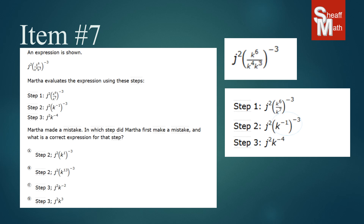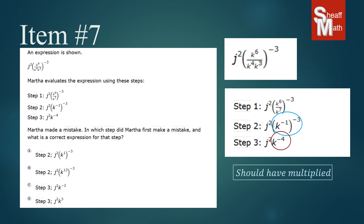Now she needs to simplify k to the negative one, which is in parentheses raised to a negative three. We call this a power to a power, and when you do this you have to multiply the exponents. What she did was she added those together and got negative four. That's incorrect — she should have multiplied, giving us k to the third.